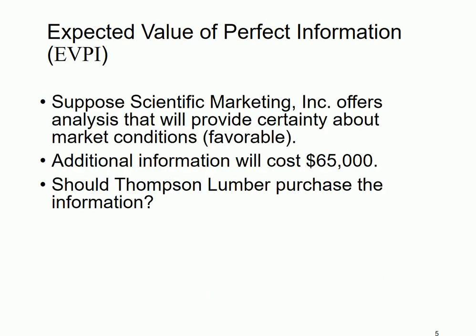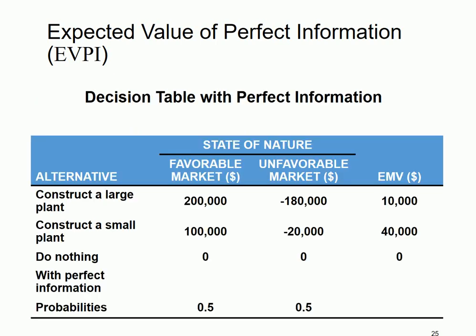Here's an example. There's a company called Scientific Marketing that is able to tell Thompson Lumber Company whether the market would turn out to be favorable or unfavorable immediately before it decides to build a plant or not. However, this service costs Thompson Lumber Company $65,000. So should Thompson Lumber Company purchase this information? We're going to calculate the EVPI, the expected value of perfect information, which will tell us the value of this additional information.